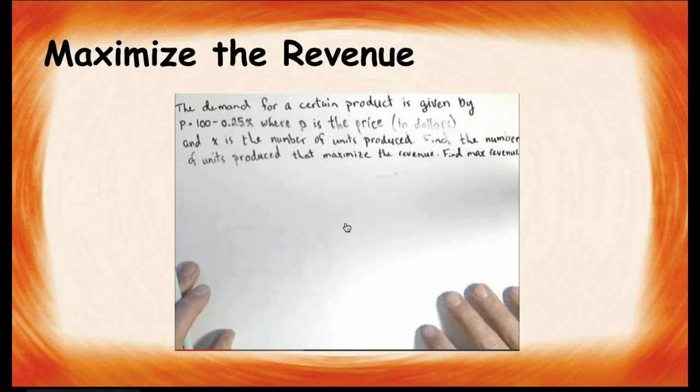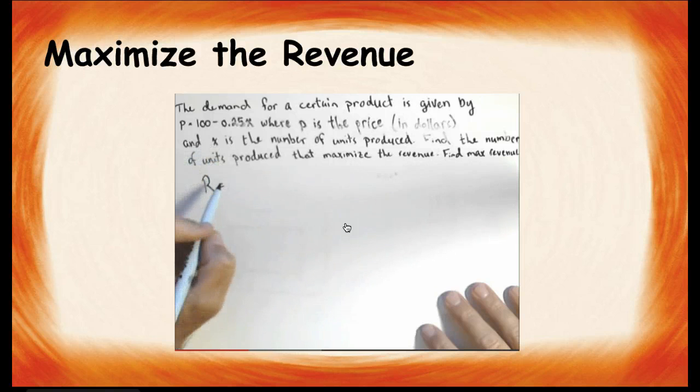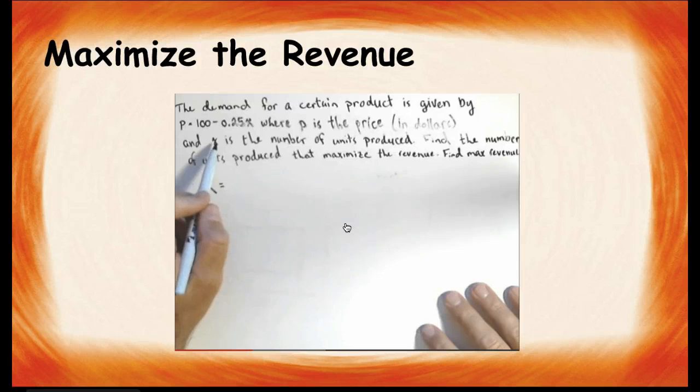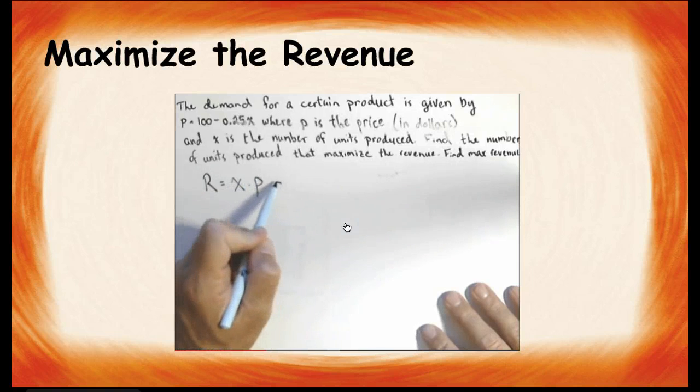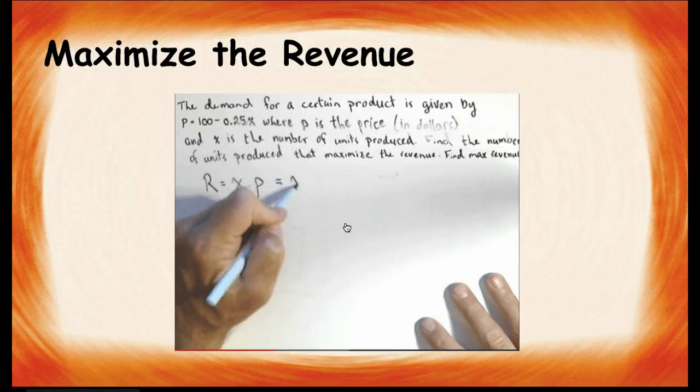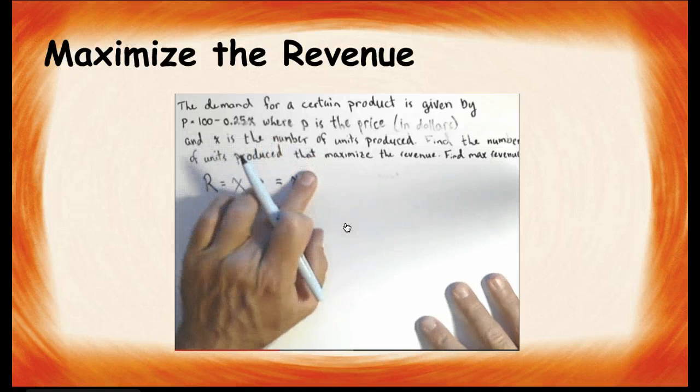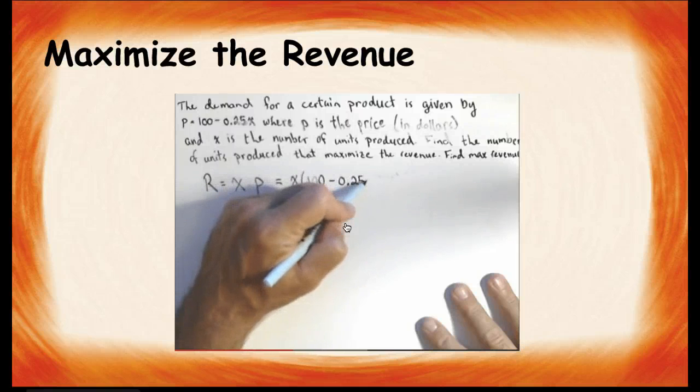Well, we have an intermediate step, and that intermediate step is to find the revenue. Revenue is all the money a company brings in. So, it's the number of units they sell times the price they charge. Now, to simplify the situation a little, we're going to assume that they sell all that they produce. So, revenue is the number of units they sell times the price they charge per unit, which, given by our linear demand function, is x times 100 minus 0.25x.